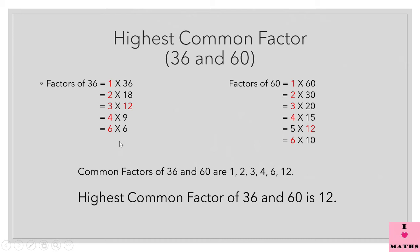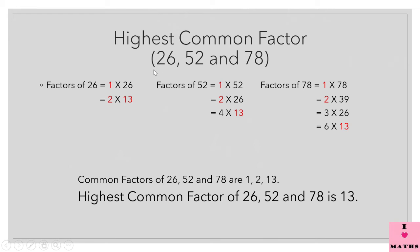Multiples are infinite. This was how we found the highest common factor of 36 and 60. Now let us take one more example — this time we have taken 3 numbers: 26, 52 and 78. We will find the highest common factor of these 3 numbers. Factors of 26: 1 × 26 = 26, 2 × 13 = 26. So factors of 26 are 1, 2, 13 and 26.